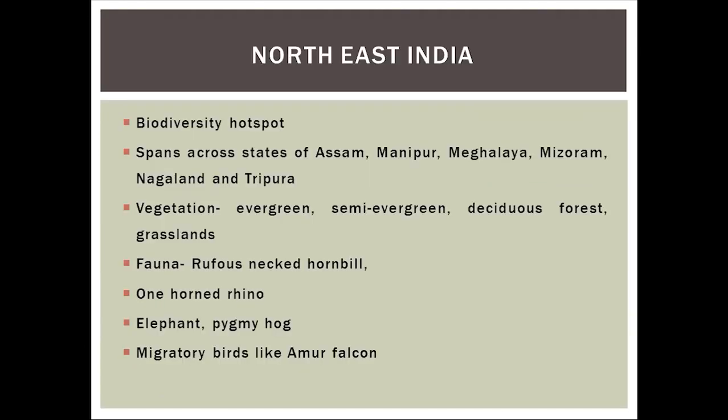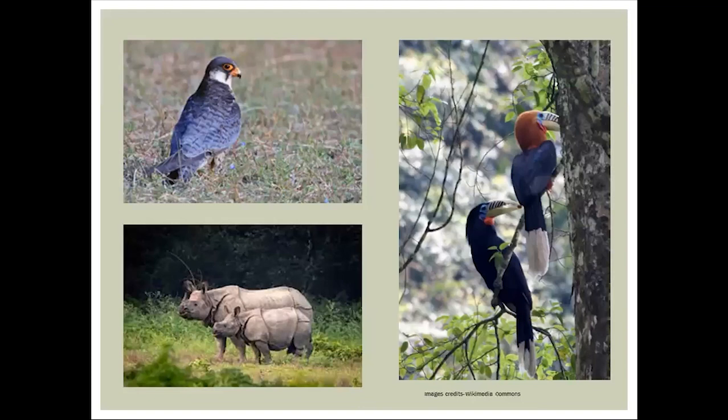Northeast India is also a biodiversity hotspot, spanning the states of Assam, Manipur, Meghalaya, Mizoram, Nagaland, and Tripura. Varied vegetation is present — one can find evergreen forest, semi-evergreen forest, deciduous forest, and grasslands. One species of hornbill present in this region is the rufous-necked hornbill, which is vulnerable.